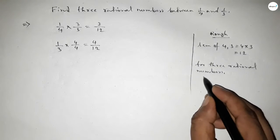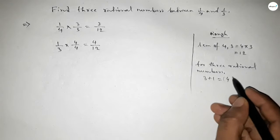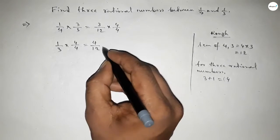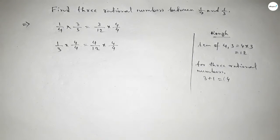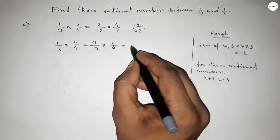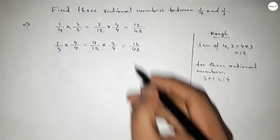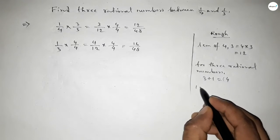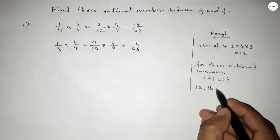Now for three rational numbers between any two numbers, we have to follow this method: multiply by 3 plus 1 equals 4 with both numbers, up and down. This gives us 12 over 48 and 16 over 48.